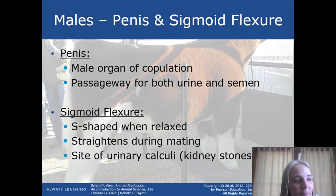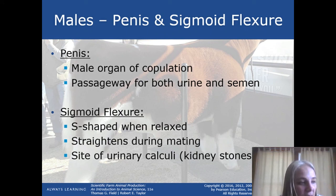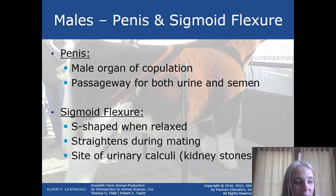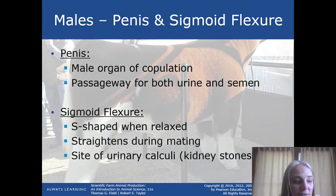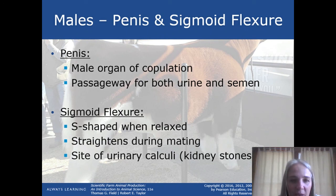As we look toward sperm exiting the body, it's important to recognize both the penis and the sigmoid flexure. The penis is the organ of copulation and the passageway for both urine and semen. With the boar, bull, and ram, the penis is S-shaped when relaxed — that S-shape is called the sigmoid flexure, and it straightens out during mating. This is really important in castrated males, as urinary stones can build up in the S-shape and cause health problems for steers or geldings — similar to what we humans call kidney stones. That's a good overview of both the female and male reproductive parts in animal agriculture. Have a great day!